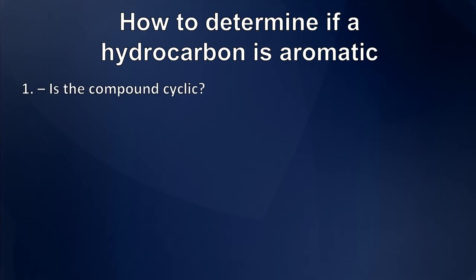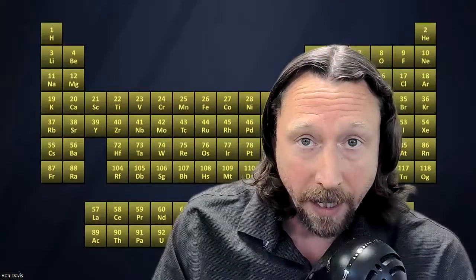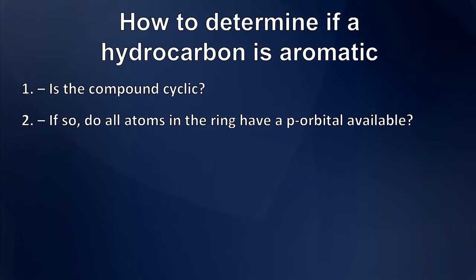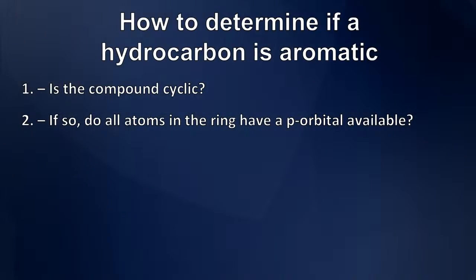Now, the first of those questions is, is the compound cyclic? If it is not cyclic, it cannot be aromatic. The second question, if it is cyclic, is do all of the atoms within that cyclic compound, all the atoms that make up the ring, have at least one available p orbital in order to allow that delocalization to happen that makes something aromatic?